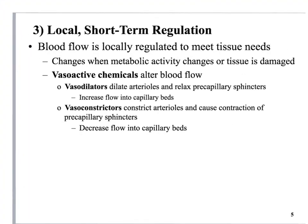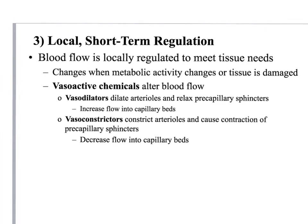Myogenic response is a short-term regulation involving vasodilation and vasoconstriction. Vasodilators increase the diameter of blood vessels and increase the flow of blood. Vasoconstriction decreases the diameter of a blood vessel and decreases the rate of flow through the vessel. Athletic trainers use topical vasodilators and vasoconstrictors — like Icy Hot or Bengay — which are topical analgesics that help regulate blood flow.